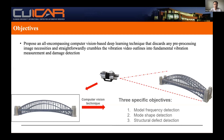We use a high-speed camera to record the vibration of structures — for example buildings or bridges — then extract the frames from the recorded video, and feed them into different machine learning or deep learning models for damage detection. We have three specific objectives: modal frequency detection, mode shape detection, and structural defect detection. In this presentation, I will briefly talk about modal frequency detection and structural defect detection.